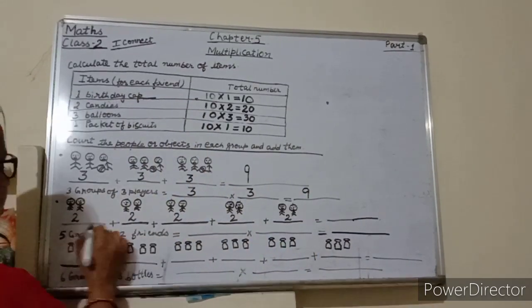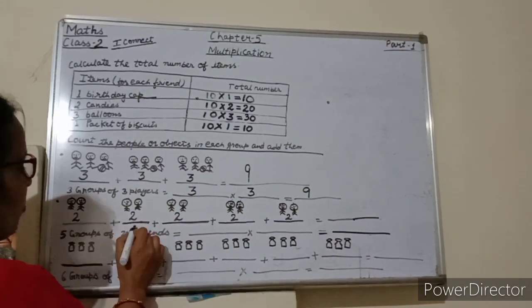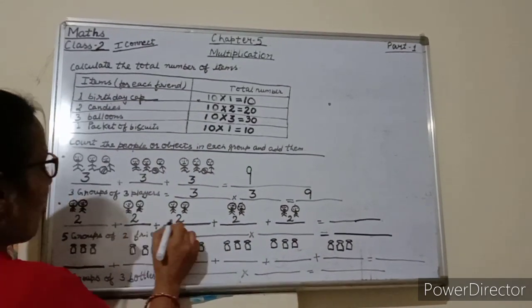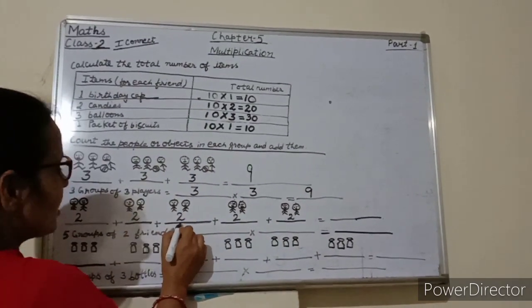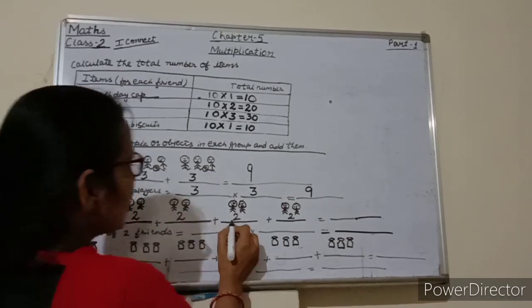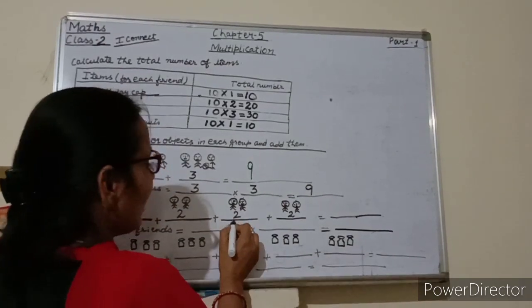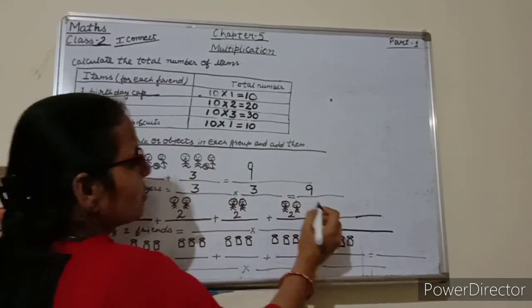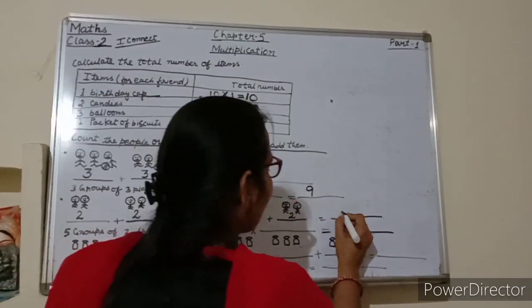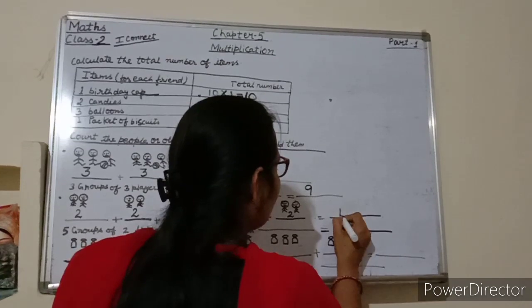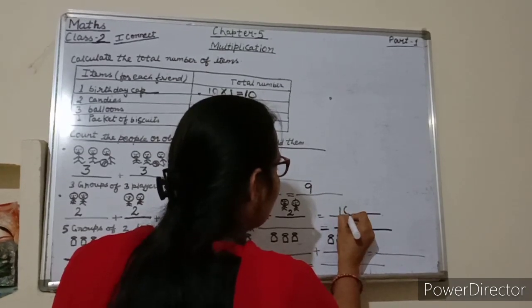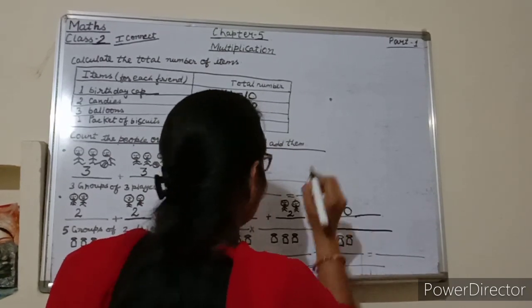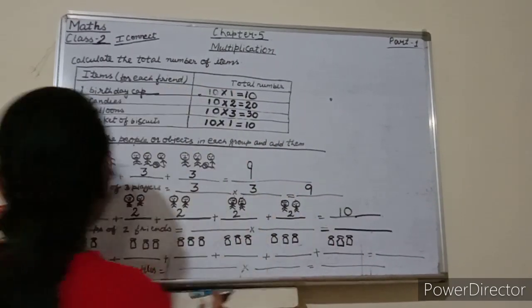2 plus 2 is 4; 4 plus 2 is 6; 6 plus 2 is 8; 8 plus 2 is 10. So here we will write 10.